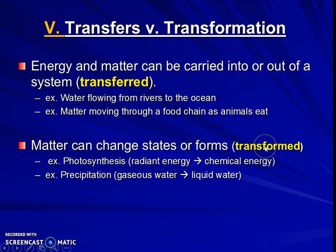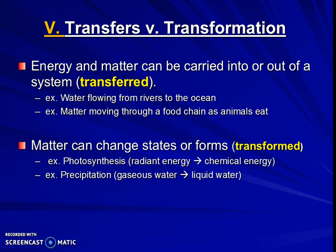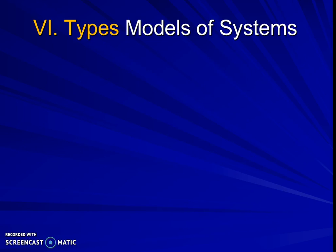A transformation is when something changes form — think of transformers changing shape. These can be changes in states of matter, like liquid to gas, or energetic changes. In photosynthesis, we take light energy — solar energy — and it's converted into chemical energy in the form of sugar inside the plant. That's a change in form. Precipitation, where gas becomes liquid, is also a transformation.